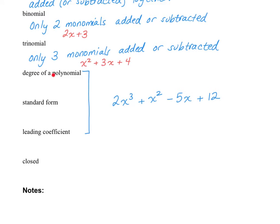For the next three terms, we're going to look at an example. I'm going to start with standard form. The standard form of a polynomial is when you have the exponents in decreasing order. So here I have x to the third, then x squared, then x to the power of one, and then x to the power of zero. Notice they are in decreasing order as you read along.